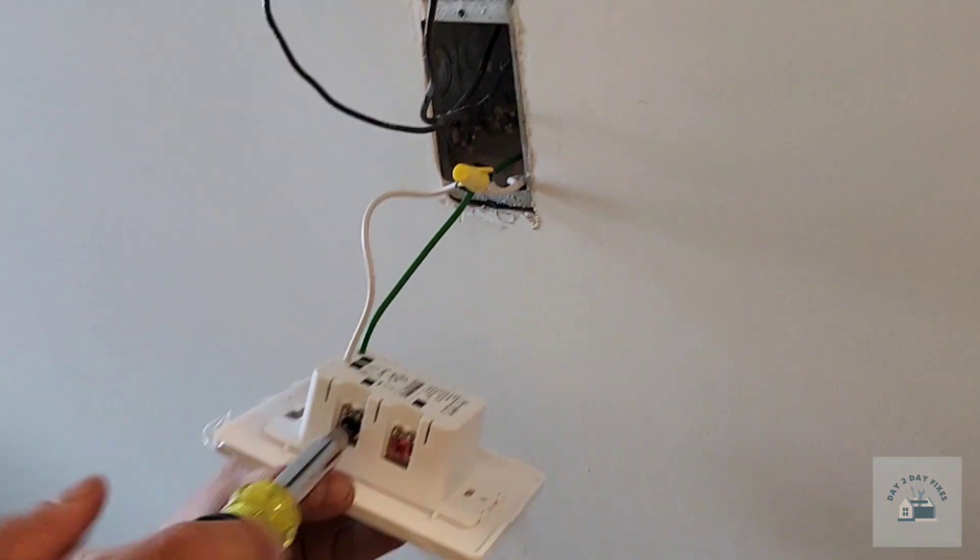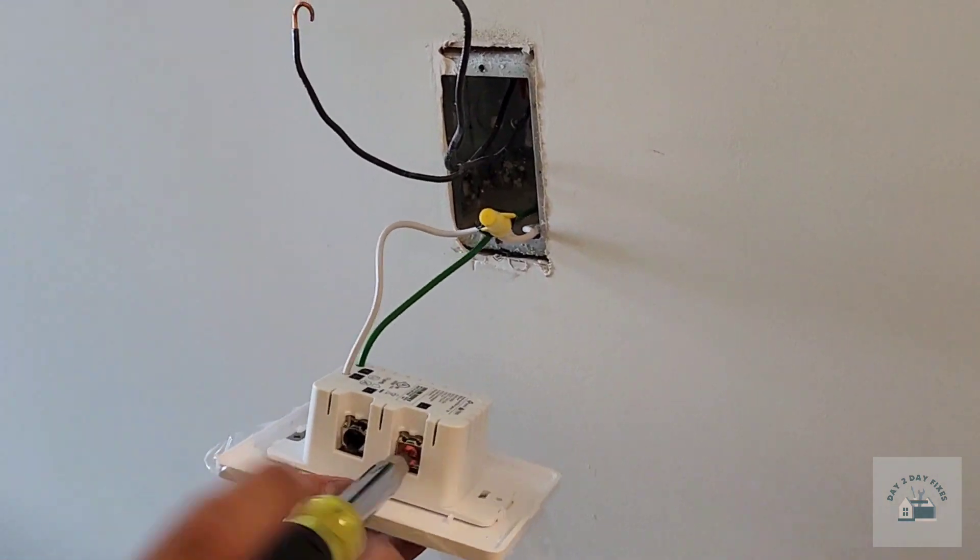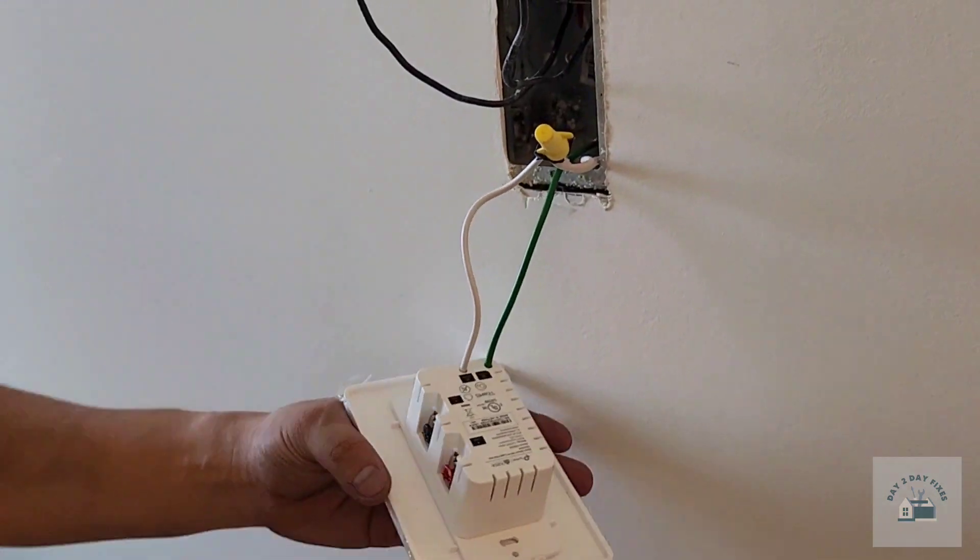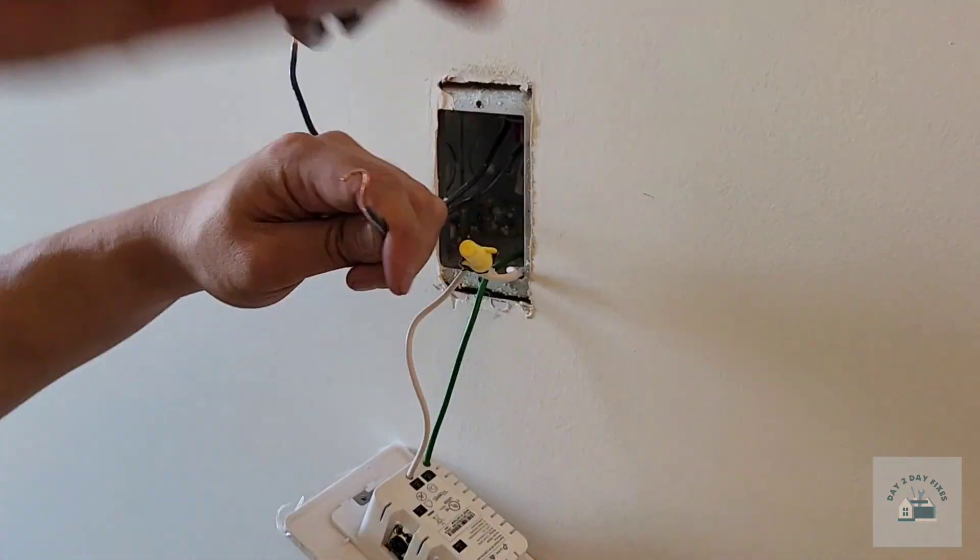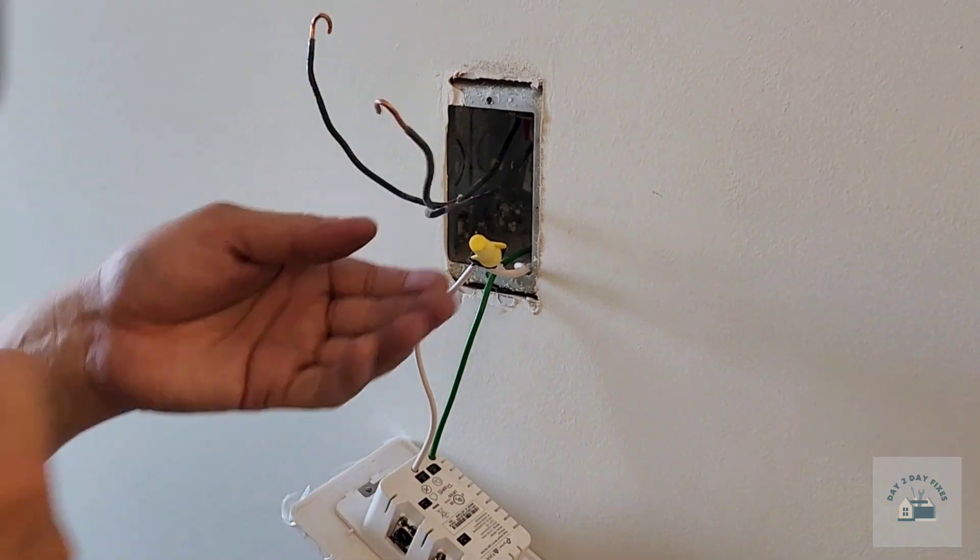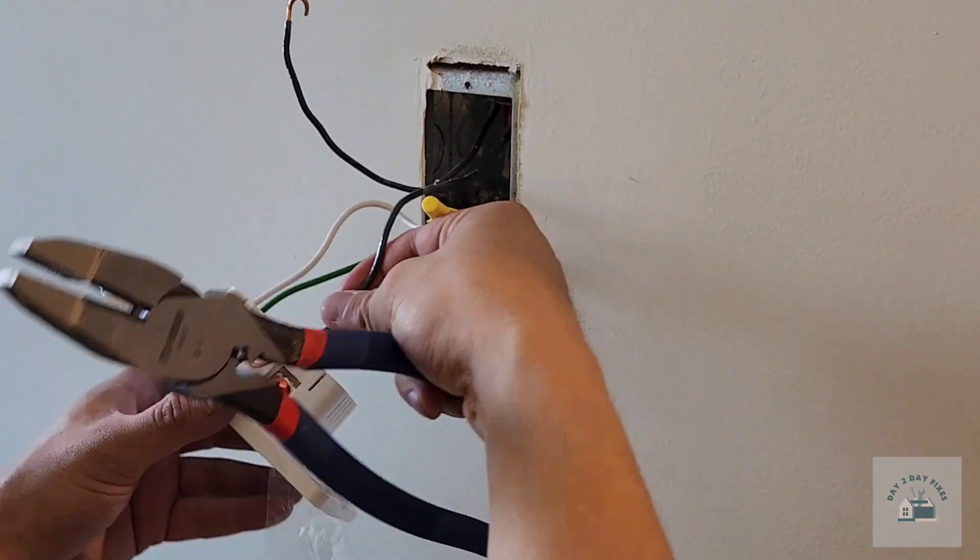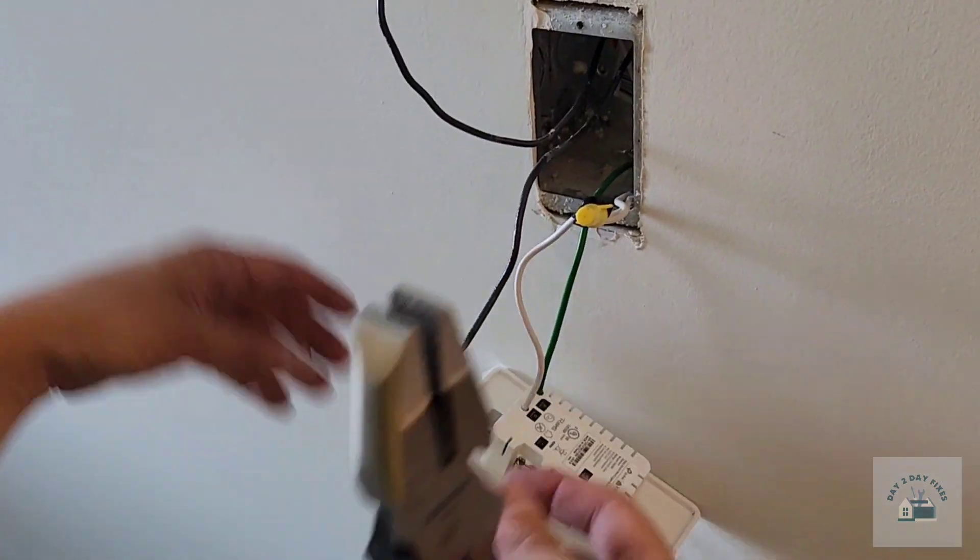Now we can connect the line or hot and just make sure the loop is placed in the direction of tightening.